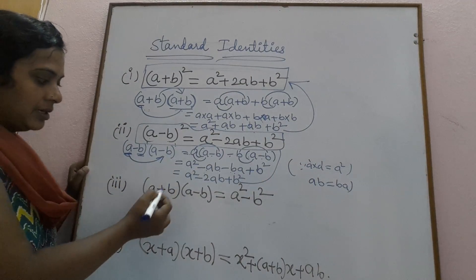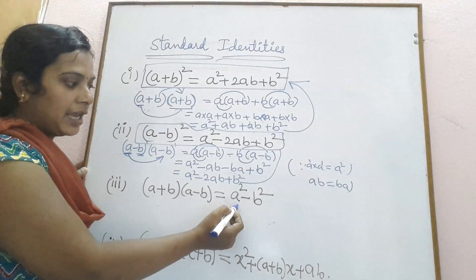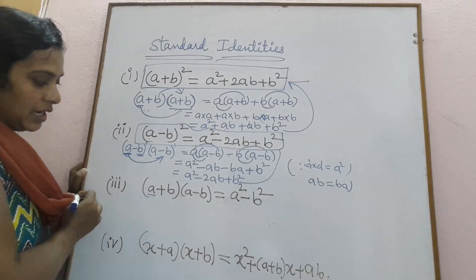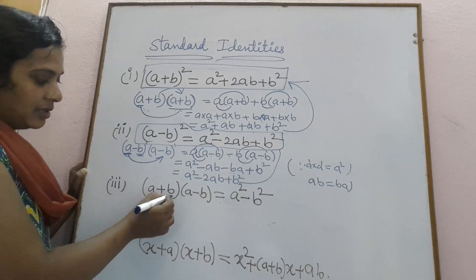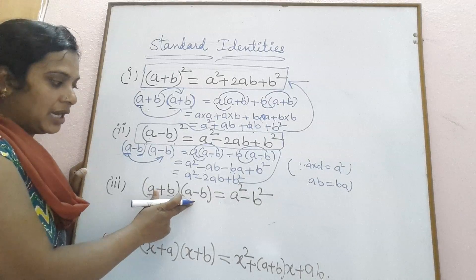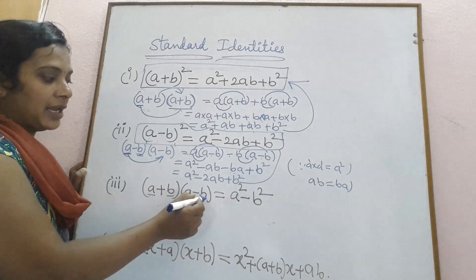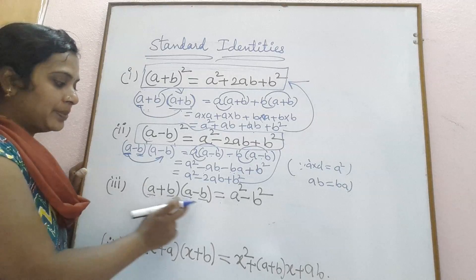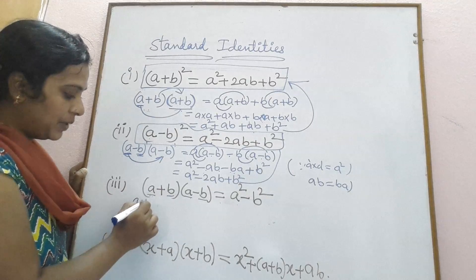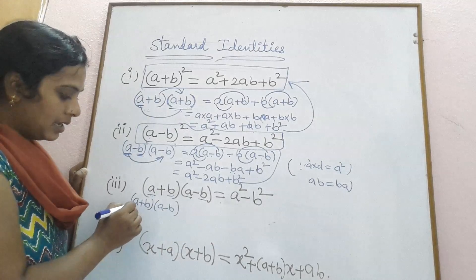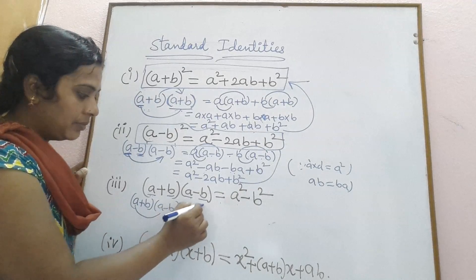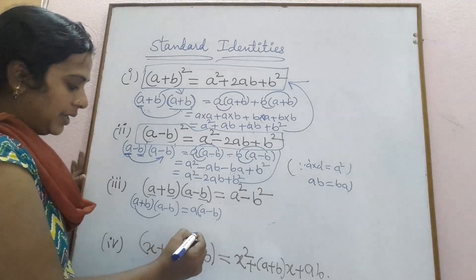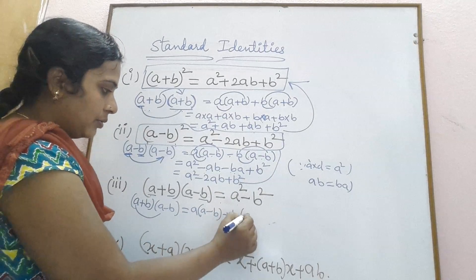The third identity is a plus b into a minus b, equal to a squared minus b squared. In the first binomial expression, the first term is a and the second term is plus b. In the second binomial expression, the first term is a and the second term is minus b. We expand the product: a into a minus b, plus b into a minus b.